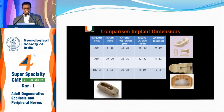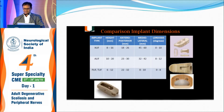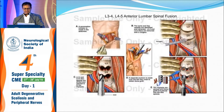This is a comparison of cage sizes between OLIF and TLIF, where one can see the surface area is three times larger. The advantage is one can correct lordosis in XLIF and ALIF, but not much in TLIF.